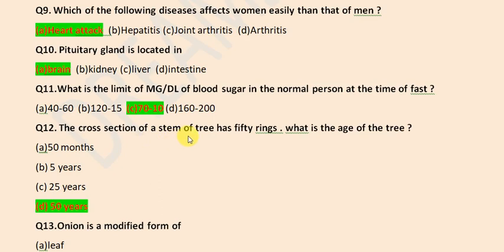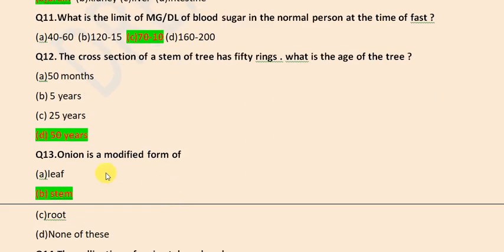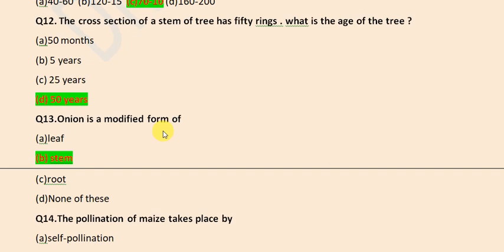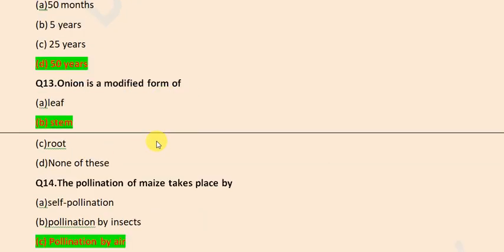The cross section of stem of tree has 50 rings. What is the age of the tree? It is 50 years. Onion is modified form of stem.